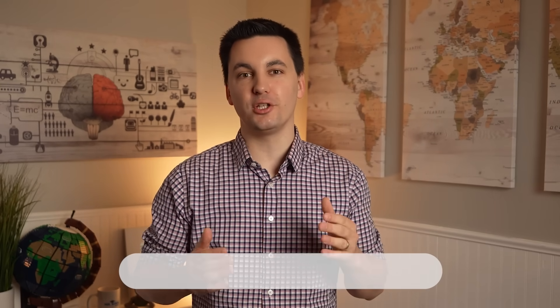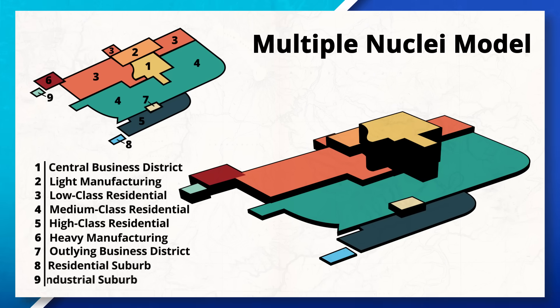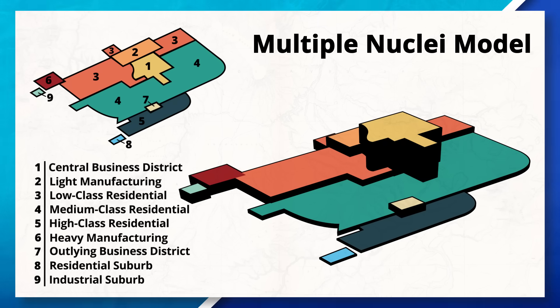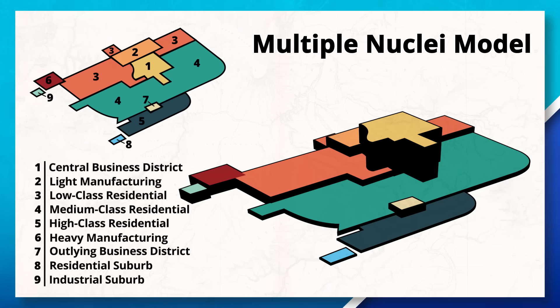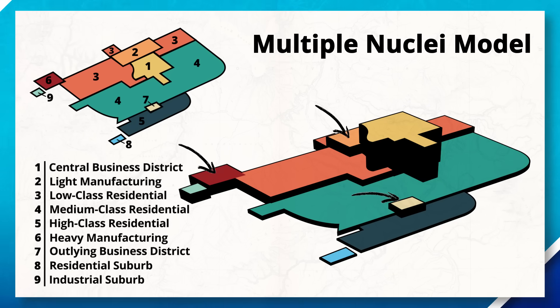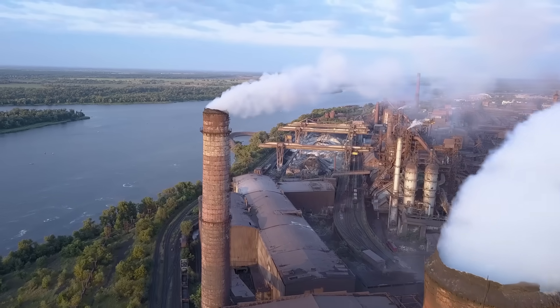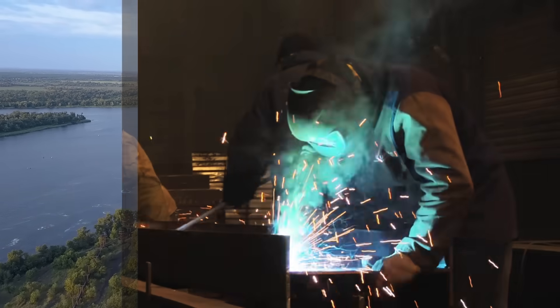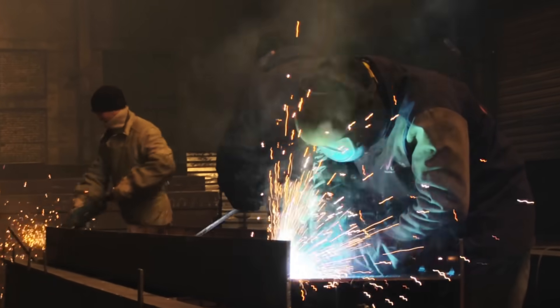The next model is the Harris and Ullman Multiple Nuclei Model, which was created around 1945. This model tries to explain how cities have changed due to advancements in technology and transportation. Unlike the last two models, this model has multiple CBDs. The multiple nuclei model shows a more complex spatial layout, with different activities and services gravitating to specific nodes. Each node attracts specific people, businesses, and services, and repels other groups and organizations. For example, the part of a city with more industrial jobs will often see more people in those jobs live around that area, while that same area will see fewer people who work in corporate jobs, as they will gravitate towards a different node closer to their work and lifestyle.